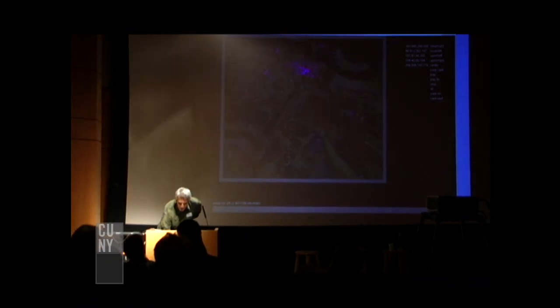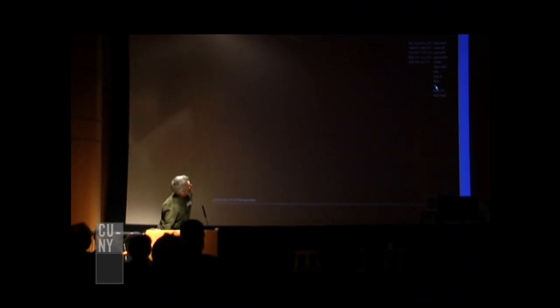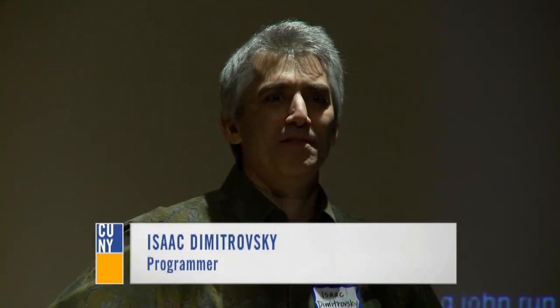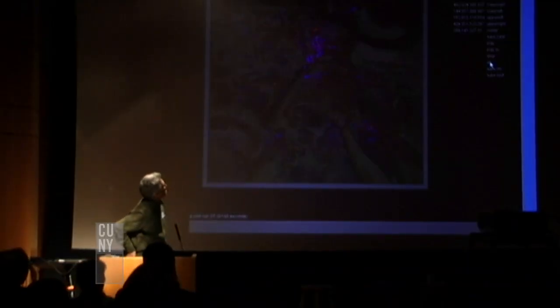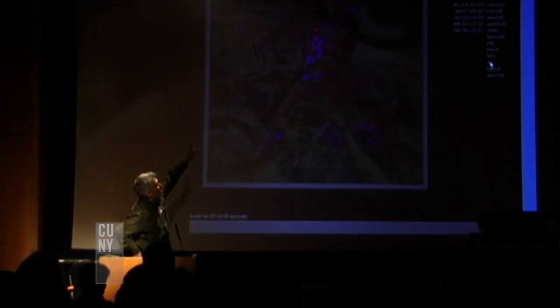I thought it would be interesting to compare some of the different people in the film and see how the patterns differ. This is actually Don. It's a similar pattern, although it looks like there's a little bit more exploration of the different features. We can see that he stays in a kind of central region of the painting — he doesn't really go to the edges very much.